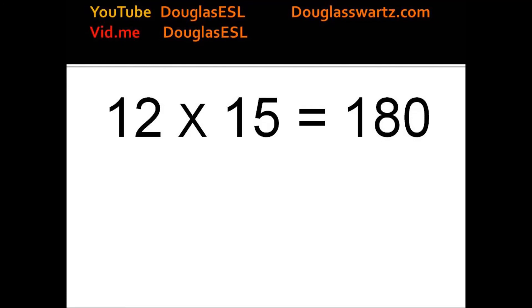12 times 15 equals 180. 12 times 16 equals 192. 12 times 17 equals 204. 12 times 18 equals 216.